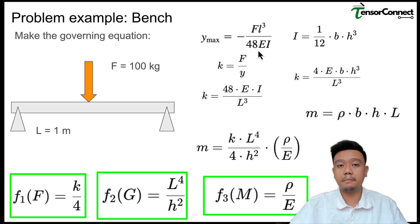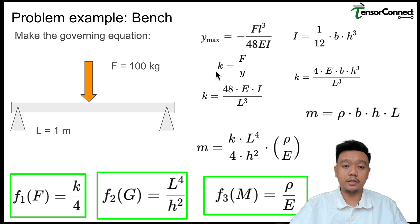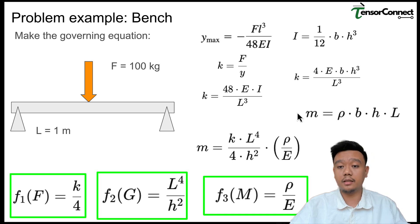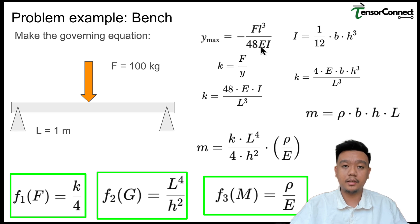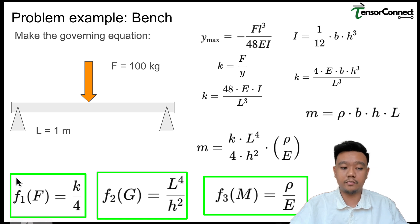We can derive the stiffness of the bench using F = k·y (Hooke's law) and rearrange this. We can also calculate the mass of the bench, M = ρ × (shape function), which we want to optimize. Plugging this mass into the governing equation, we get a combined expression where K/4 is the functional part F1, L to a power is the geometry part F2, and ρ/E is the material properties part F3.